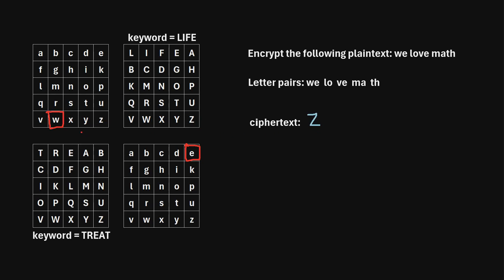Next, we identify where W and E intersect in the bottom left square. Drawing some lines to see where they intersect, they intersect at the capital letter R. So the next letter in our ciphertext is R. Now we're done with this first letter pair. Let's move on to the next letter pair: L, O.